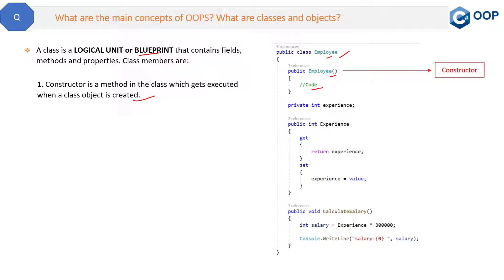Second class member is a field, which is right now experience here. What is a field? A field is a variable of any type. So basically we store the data in the field in our .NET applications.